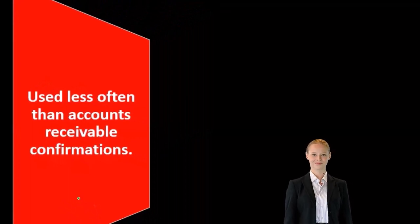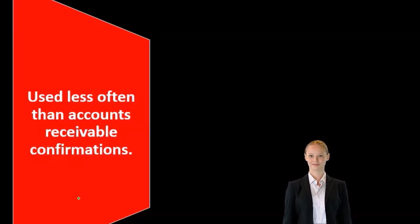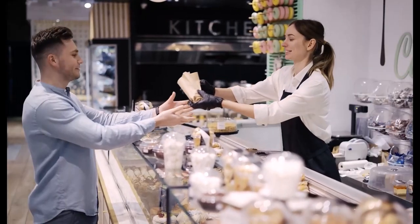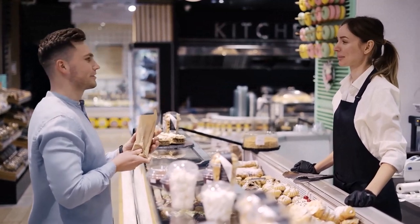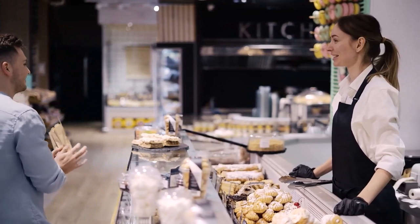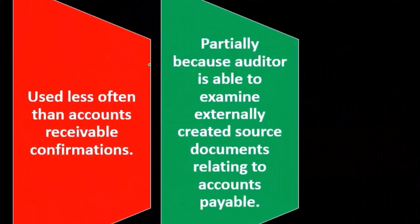Accounts payable — we can do the same thing, but it's usually not as necessary. We're almost definitely going to do confirmations for cash, probably for accounts receivable to some degree depending on the entity, and for accounts payable we may do it but with a lesser degree of likelihood. Essentially, we'd be sending confirmations out to the vendors that the company we are auditing owes money to. AP confirmations are used less often than accounts receivable confirmations.